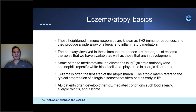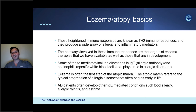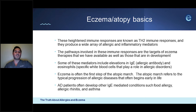When we talk about eczema, we often refer to it as the first step of the atopic march, or the allergic march. That march refers to a typical progression of allergic diseases that often begin early in life. Patients will start out with eczema, then go on to develop other IgE-mediated conditions such as food allergy, allergic rhinitis, and asthma.